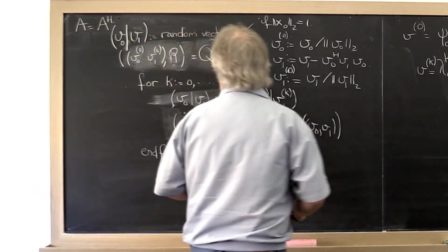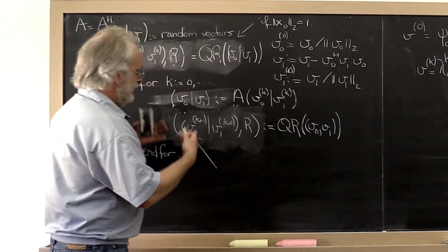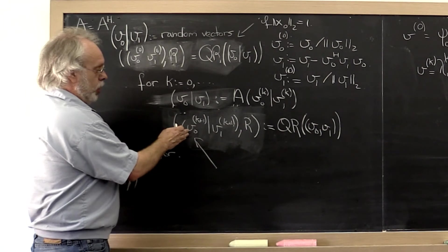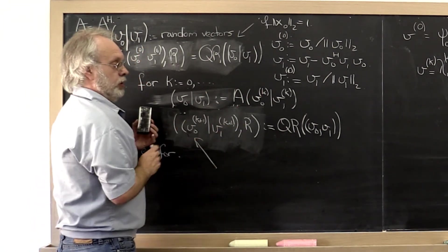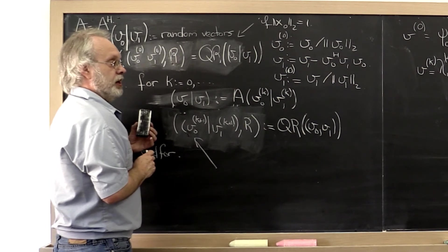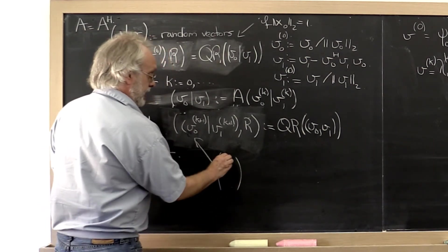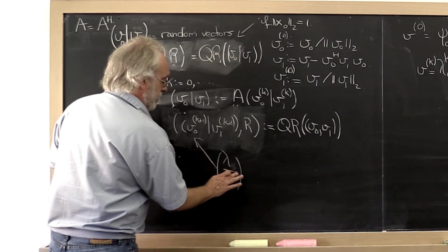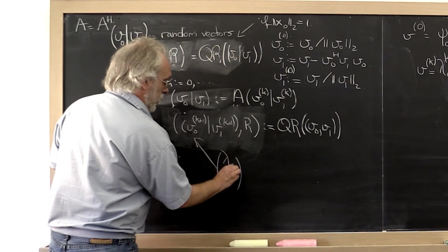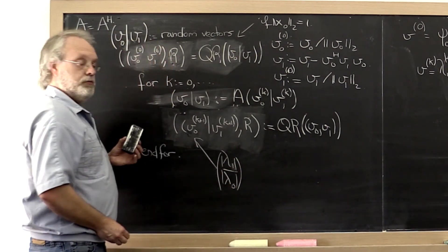Now what would we expect? We would expect that the coefficient that tells us every time through the thickness how fast we start homing in or how fast we start wiping out all of the components in the direction of the other eigenvectors, we expect that coefficient to be dominated by or dictated by the ratio of lambda 1 divided by lambda 0 in absolute value.